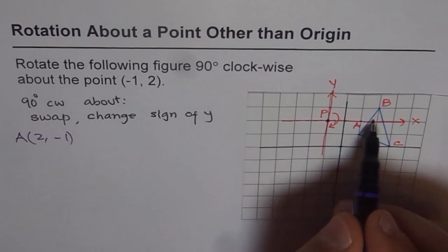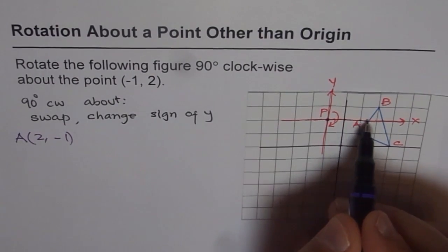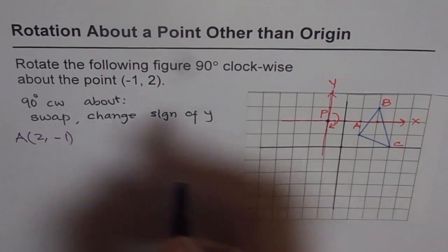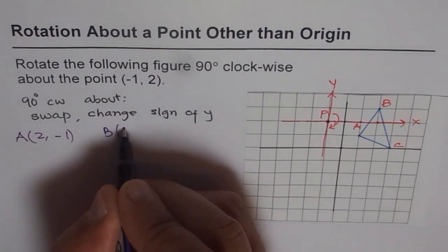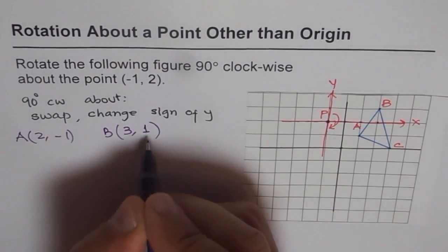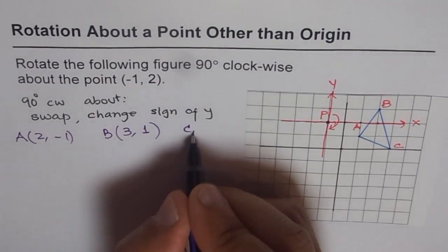Now from P, let us check the position of B. We have to go 1, 2, 3 on its right and 1 up. So B is 3 right, that means 3 positive and 1 up means 1 positive. How about C?